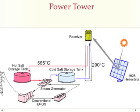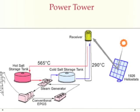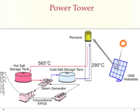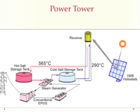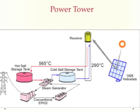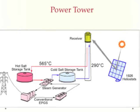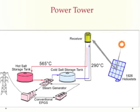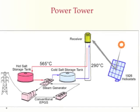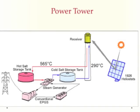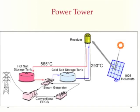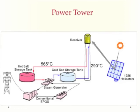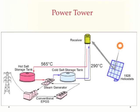The operation of a power tower is illustrated here. Sunlight is reflected off flat mirrors called heliostats, which focus onto the receiver at the top of the tower. The hot fluid is then used to produce steam or goes into storage. The steam is used to produce electricity, much like the parabolic trough system.